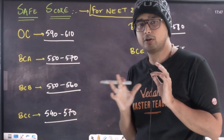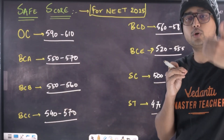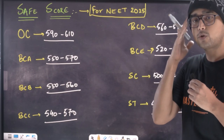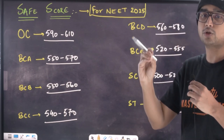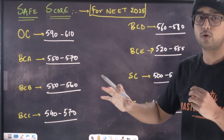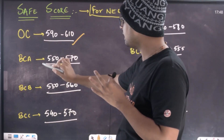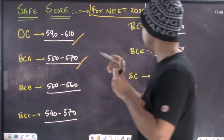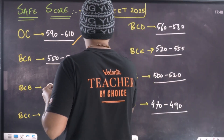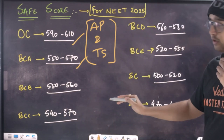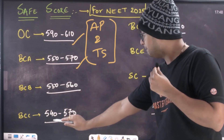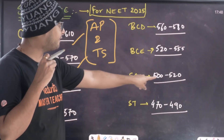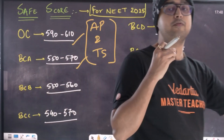So we can really tell you — I have to share the estimates. In the future, if you have rounds 2, 3, or a mock-up round, there is a lot of data and I will do a video on that definitively. But right now, the safe score you should be focusing on — the minimum score — for OC candidates is 590-600 minimum. In 2025, BC-A candidates: 555-570. This is for both Andhra and Telangana. BC-B: 550-560. BC-C: 540-570. BC-D: 560-580. BC-E: 520-555. SC: 520. ST: 470-490. This is the safe score for all categories.